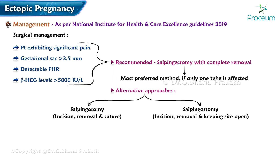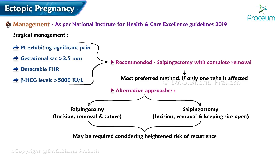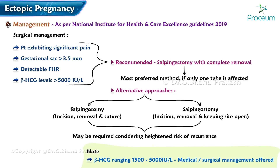The most preferred method is salpingectomy if only one tube is affected. Salpingotomy or salpingostomy may be required considering the heightened risk of recurrence. Note: if beta-hCG ranges between 1,500 to 5,000 IU/L, either medical or surgical management can be offered.